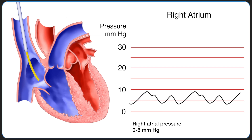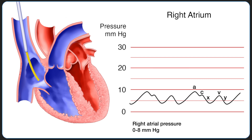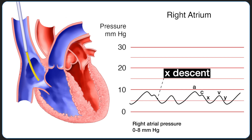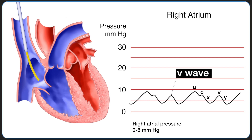In order of appearance, the A wave corresponds to atrial contraction. The C wave corresponds to movement of the tricuspid valve into the right atrium during isovolumic ventricular contraction. The X descent corresponds to atrial relaxation. The V wave corresponds to systolic filling of the atrium. And the Y descent corresponds to early ventricular filling.